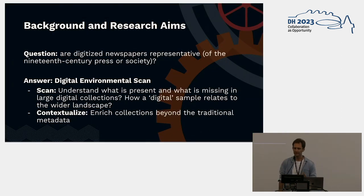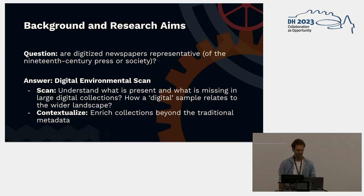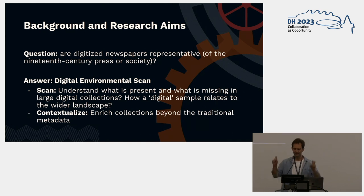The questions we mainly try to address are: how digitized is the 19th-century press? How representative is the digitized press of 19th-century society, or of the 19th-century press as a whole? We try to answer this by doing mainly two things: we try to understand what is present in our data, what is missing, and how the digital sample relates to the wider landscape — to the press as a whole or to society.